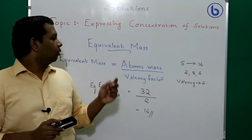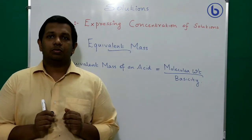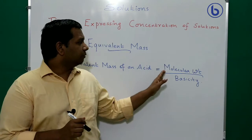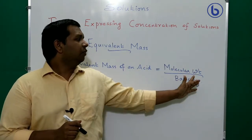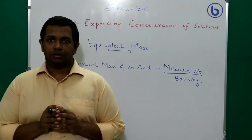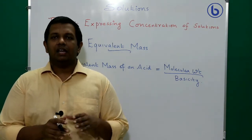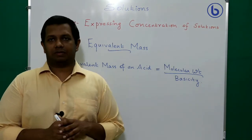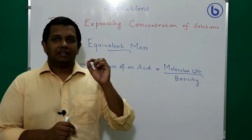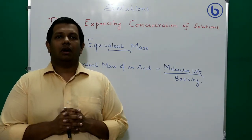Next, we will find the equivalent mass of an acid. The formula is: equivalent mass of an acid = molecular mass ÷ basicity. Basicity is defined as the number of donatable H⁺ ions in a particular acid. If a compound can donate 2 H⁺ ions, its basicity is 2.